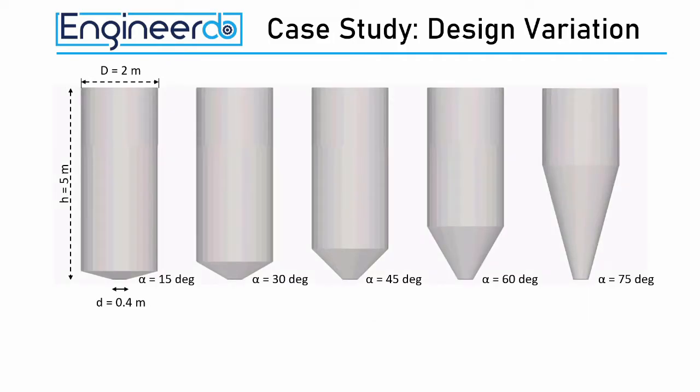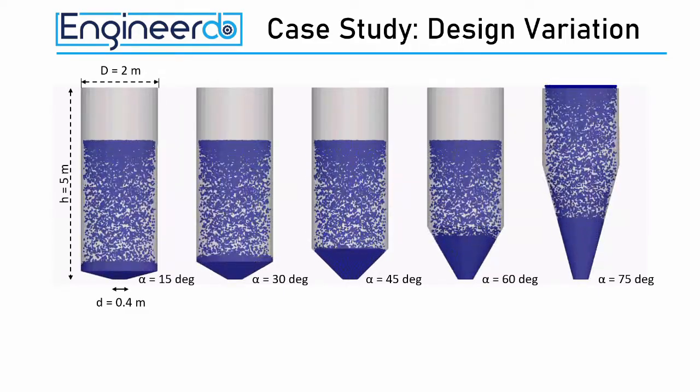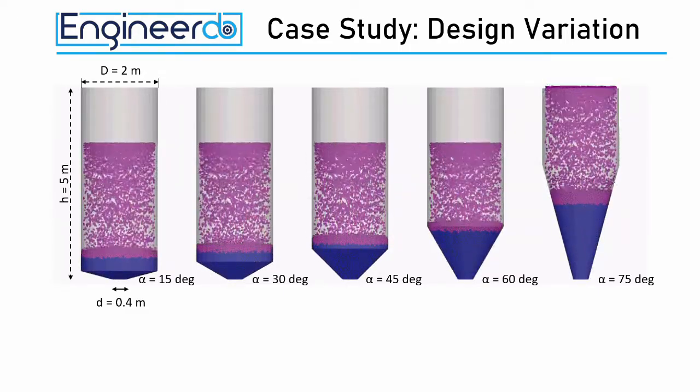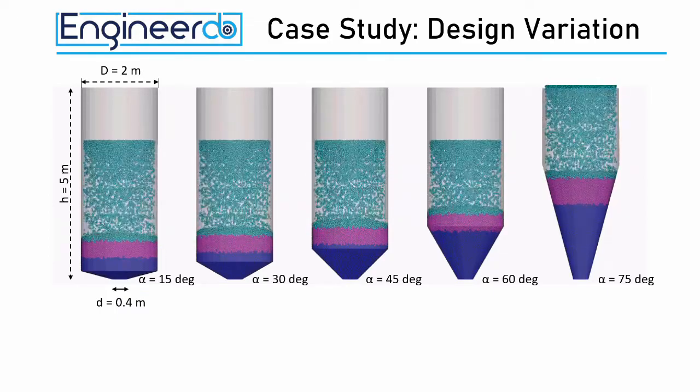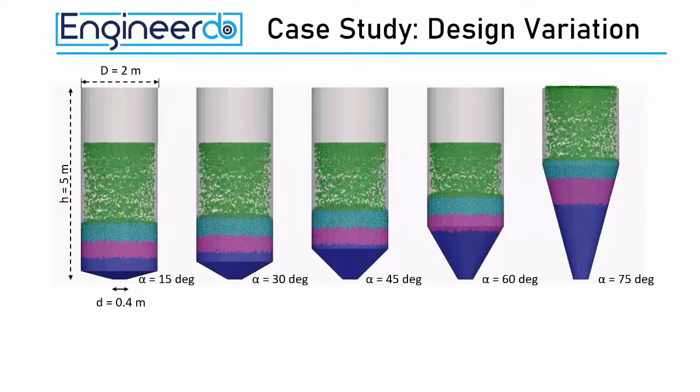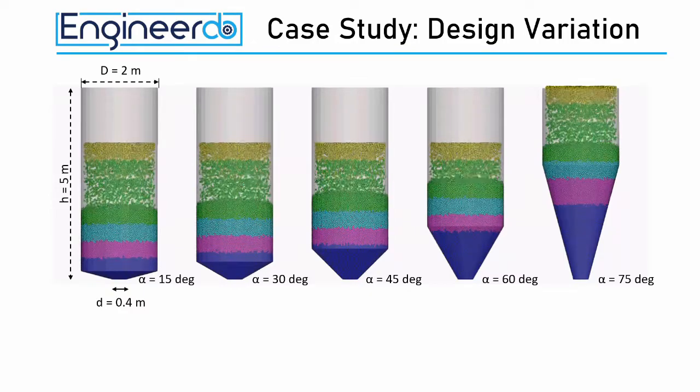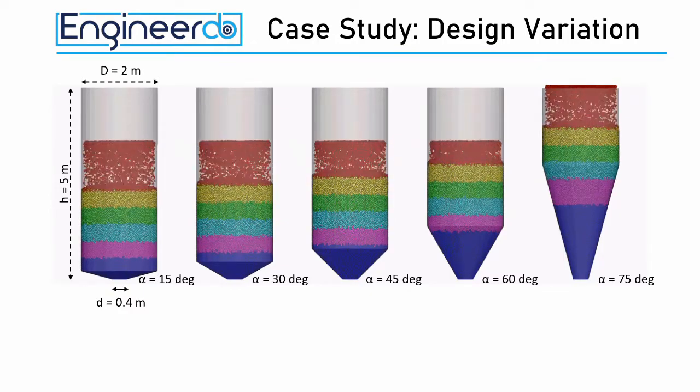Here we can see the filling process of the silos from the front view. That means we are looking from the outside through the silo wall. The different colors of the 6 particle layers each represent the same numbers of particle, or the same mass of nearby 830 kg.